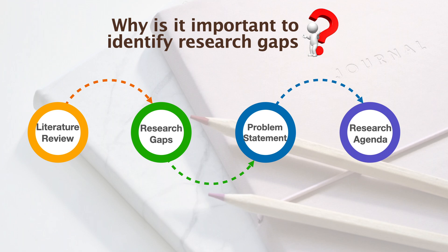Why is it important to identify research gaps? This diagram shows the relationship between literature review, research gaps, problem statement, and the research agenda. The main objective of doing a literature review is to identify research gaps. In every research work, there is always a problem that needs solving. Before any research agenda can be drawn up, the research problem must be well established first. Also, the nature of the problem to be studied must be well structured.